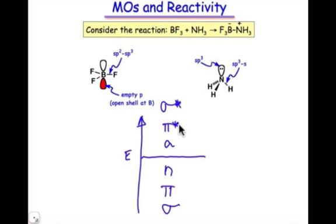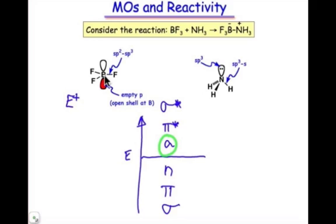But if there isn't an A or a pi-star, then sigma-star would be the most accessible empty orbital. So for our electrophilic partner of boron trifluoride, we can go through those empty orbitals and conclude that there is an A, because this is a six-electron boron. There's an empty atomic orbital that's a p orbital in this sp2-hybridized boron atom. Boron's LUMO is the empty atomic orbital centered on boron.